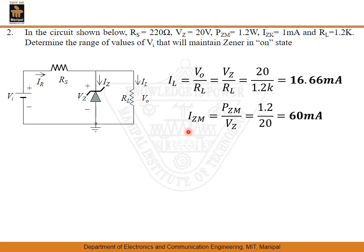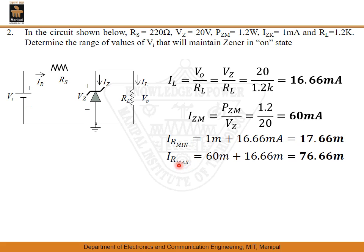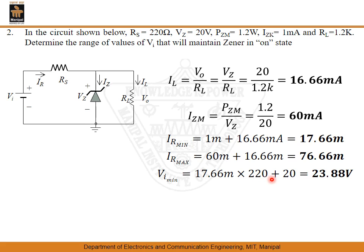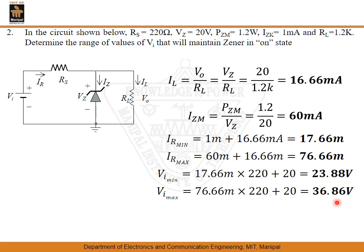With IZK and IZM known, IR minimum equals IZK plus IL, which is 17.66 milli amperes. IR maximum equals IZM plus IL, which is 76.66 milli amperes. Substituting: VIN minimum equals IR minimum times RS plus VZ, giving 23.88 volts. VIN maximum equals 76.66 milli amperes times RS of 220 ohm plus 20 volts of Zener, giving 36.86 volts.